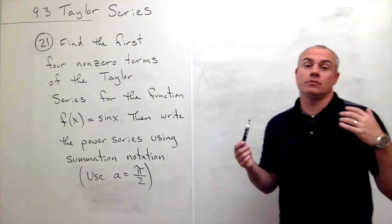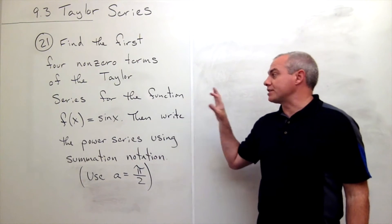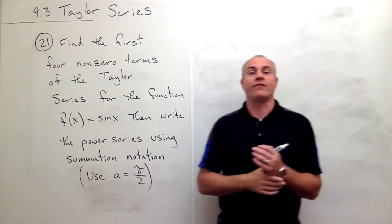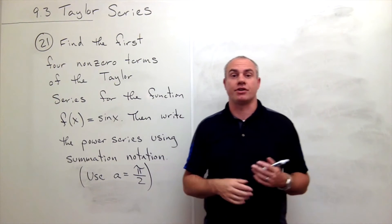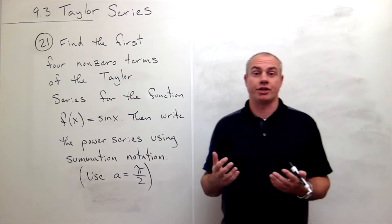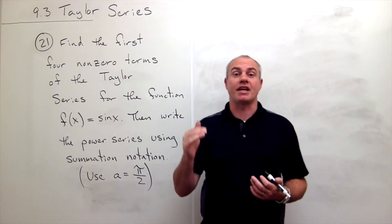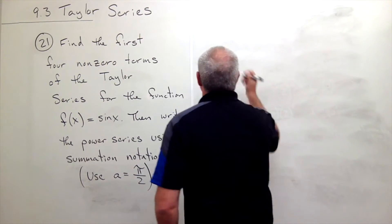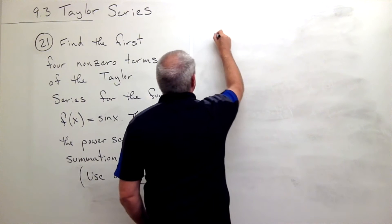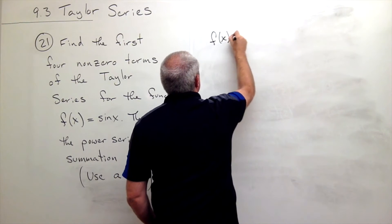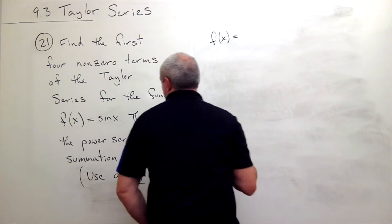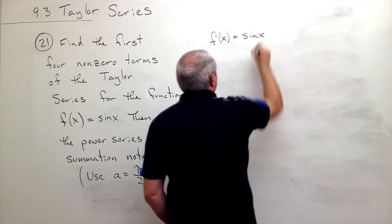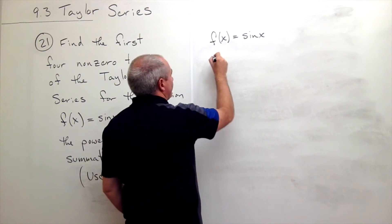So like I've been saying in previous problems, the first thing that we want to do when we find a Taylor series is we just want to write down the function and then take a bunch of derivatives of that function. So I'm going to write down my function f of x is equal to sine of x and then let's take some derivatives of that function.